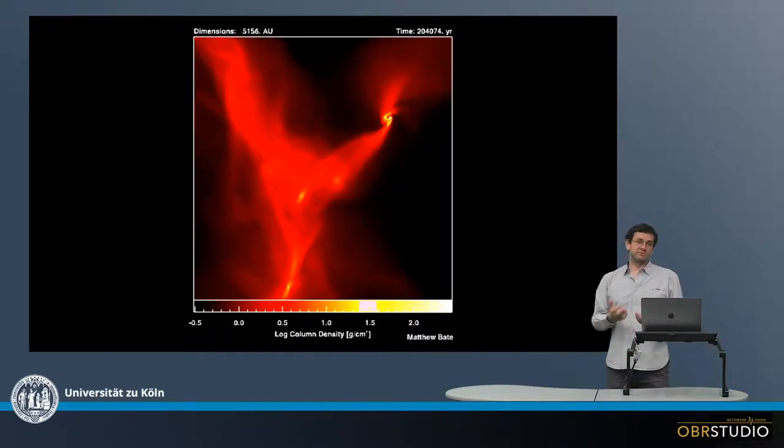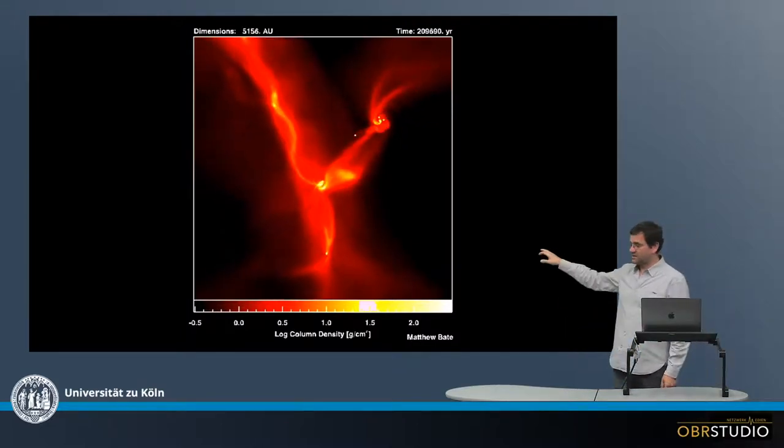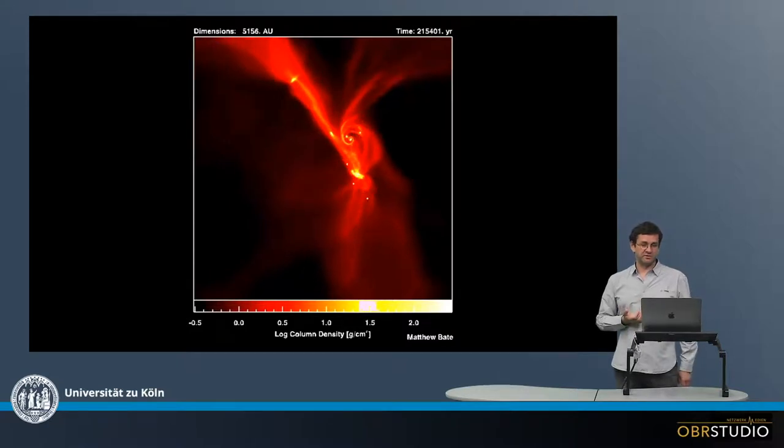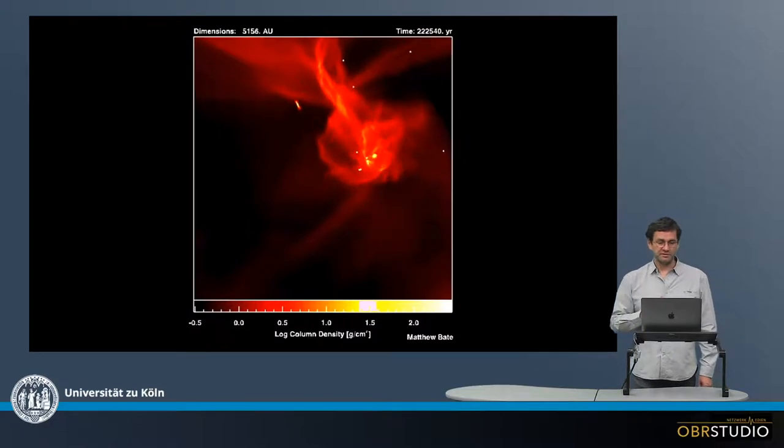But it also shows that most of the stars do not have any disks. Now, the lifetimes of these disks shown here are only of a couple of 10,000 or 100,000 of years, but we need lifetimes of disks of maybe a few millions of years.